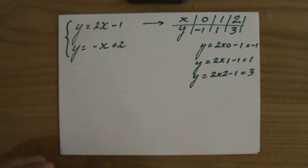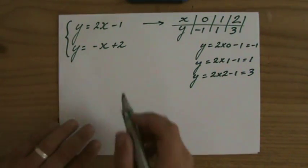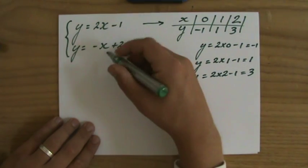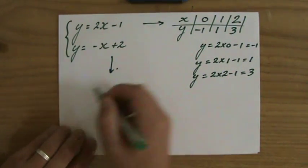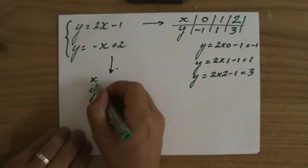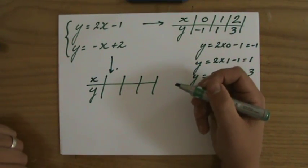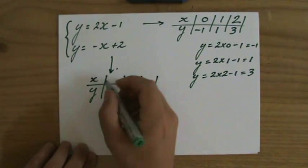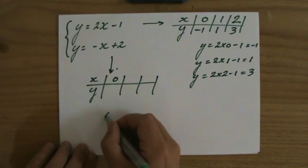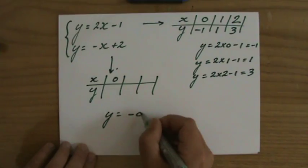I'm going to do the same thing for my second equation. I'll put a little arrow this way, make a fishbone table. To draw a line we only need two coordinates, but I always find three to check myself.